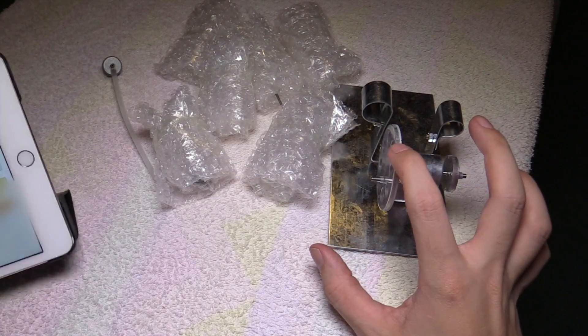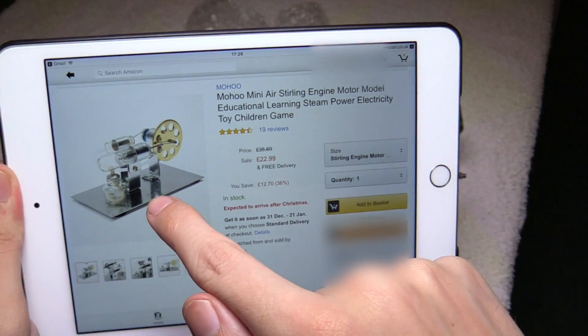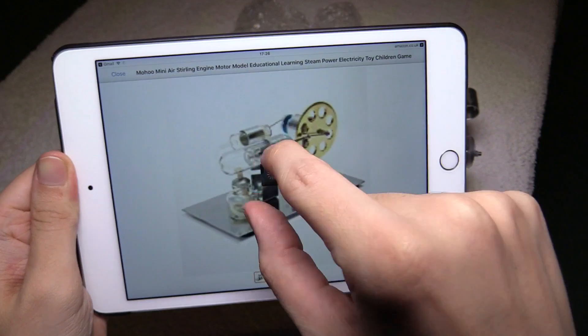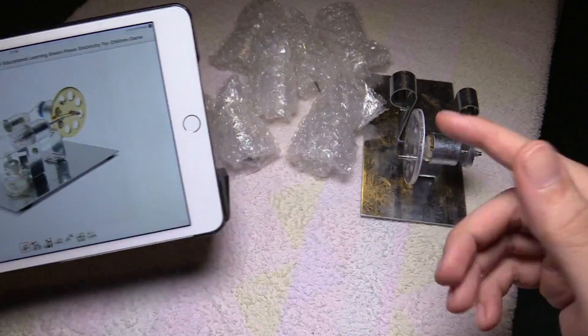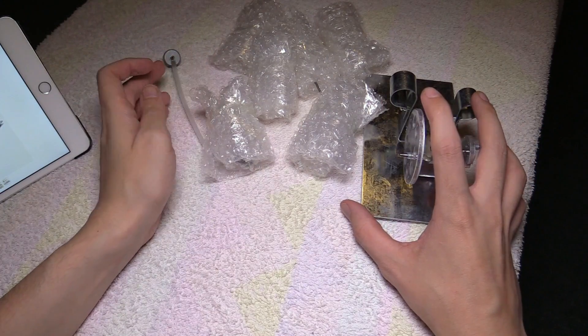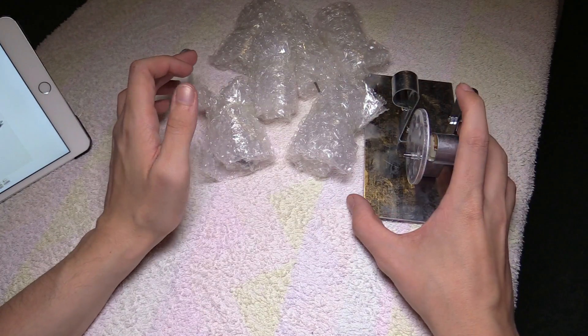Hi everyone, today we're going to put together this kit which should end up looking like this. The idea is you put oil in here, light the burner and it will make the motor spin. It's quite a fun little project. I'm actually giving this to someone as a gift, but I want to put it together for them first.